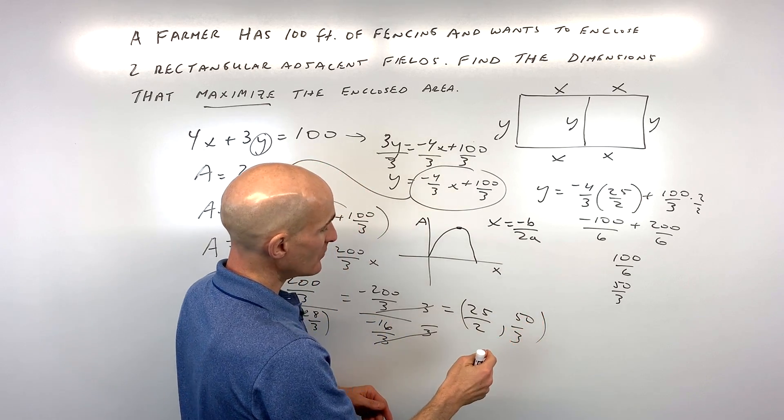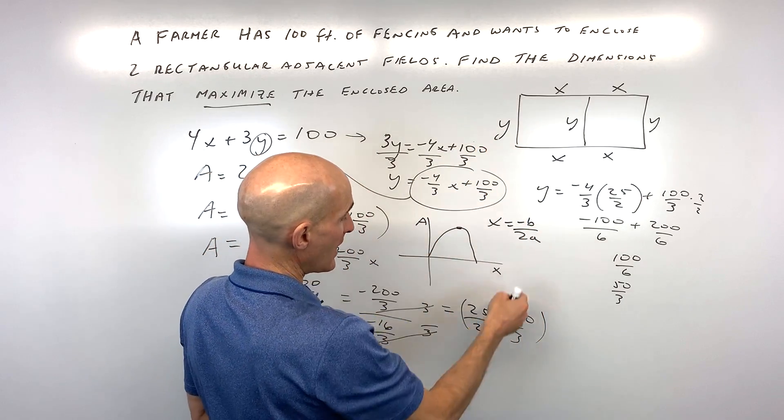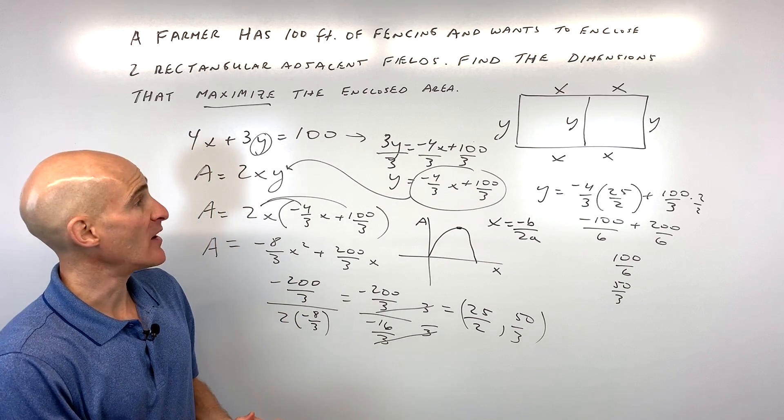So the dimensions now are going to be X's, 25 over 2, and Y equals 50 over 3. And that's going to give you the maximum area.